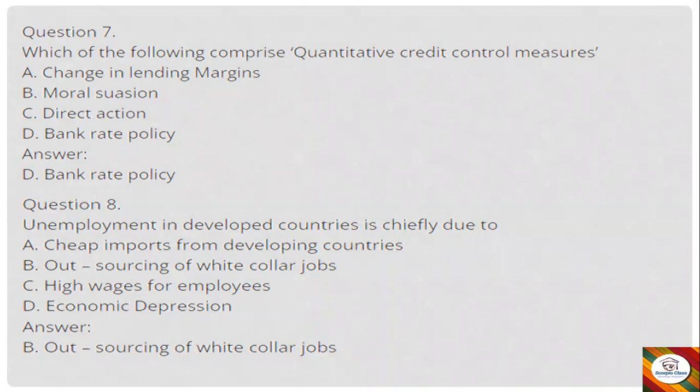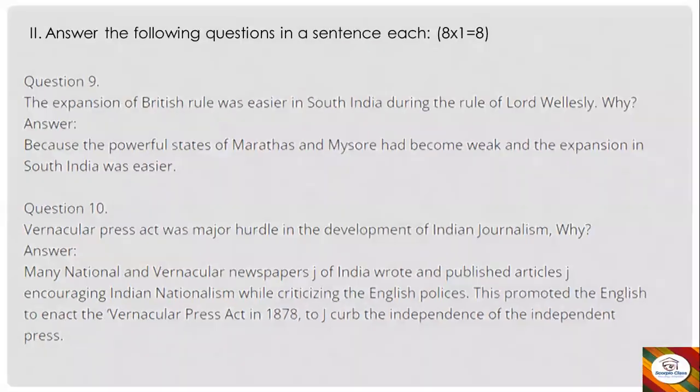Question 7: Which of the following comprises quantitative credit control measures? A) Change in lending margins, B) moral suasion, C) direct action, D) bank rate policy. Answer: D, bank rate policy. Question 8: Unemployment in developed countries is chiefly due to — A) cheap imports from developing countries, B) outsourcing of white-collar jobs, C) high wages for employees, or D) economic depression. Answer: B, outsourcing of white-collar jobs.